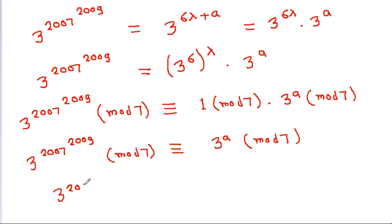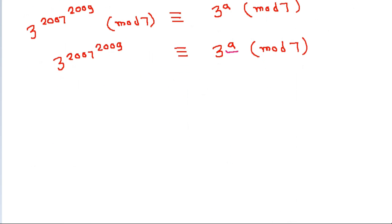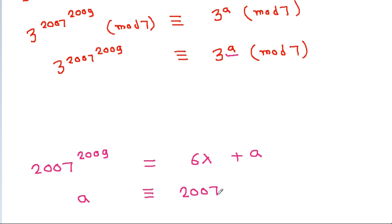So 3^(2007^2009) ≡ 3^a mod 7, and now we need to find a. We have 2007^2009 = 6q + a, so a ≡ 2007^2009 mod 6.